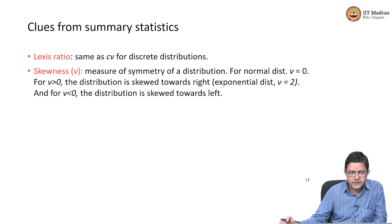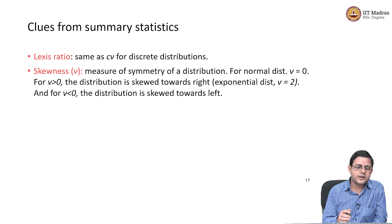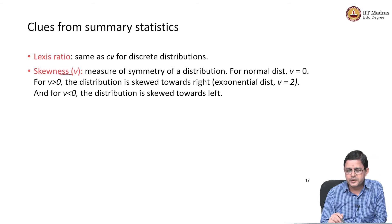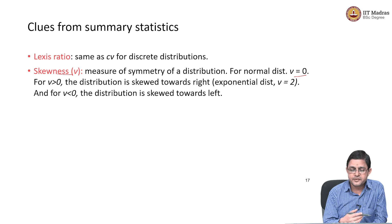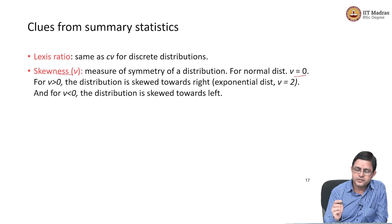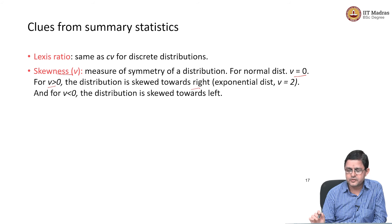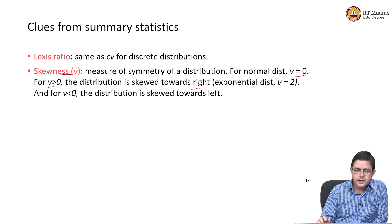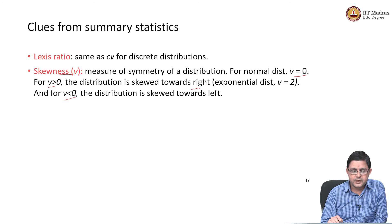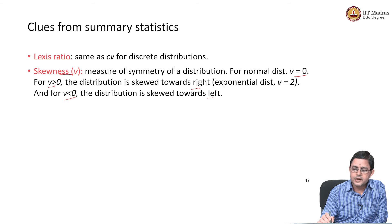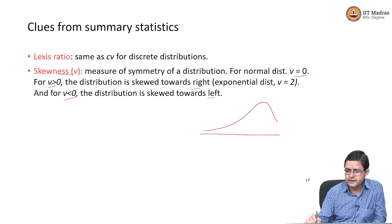There is something called a Lexis ratio — essentially Cv for discrete distributions, with similar interpretations. Regarding skewness: skewness for normal distribution is 0 because normal distribution is famously symmetric. If skewness is positive, you are thinking about right-skewed distributions — for example, exponential distribution has a skewness of 2. For skewness values less than 0, negative skew, the left tail extends longer than the right tail.